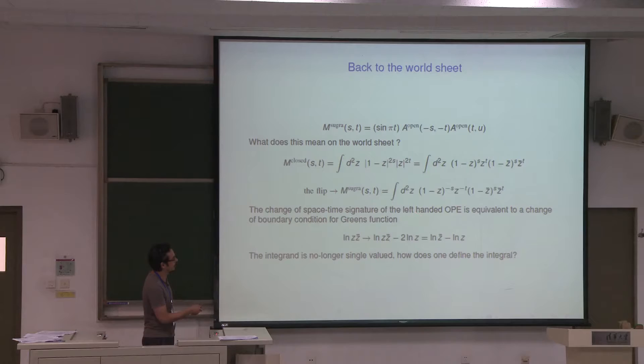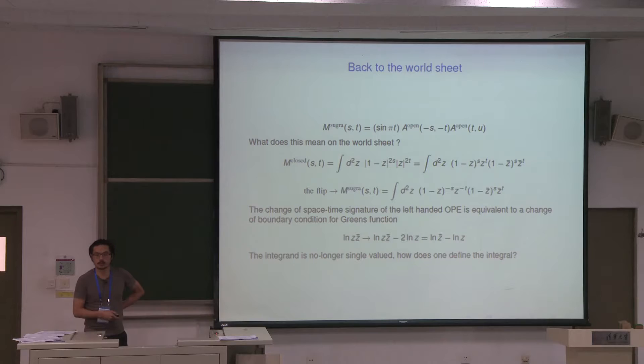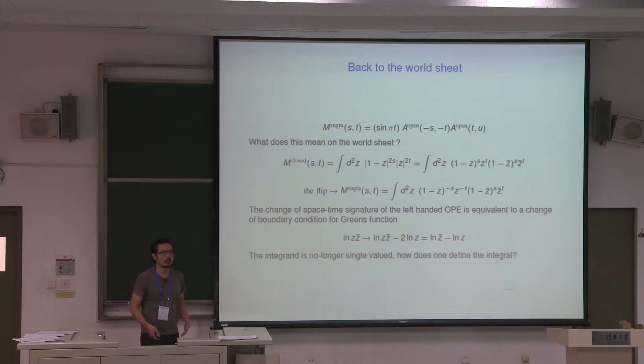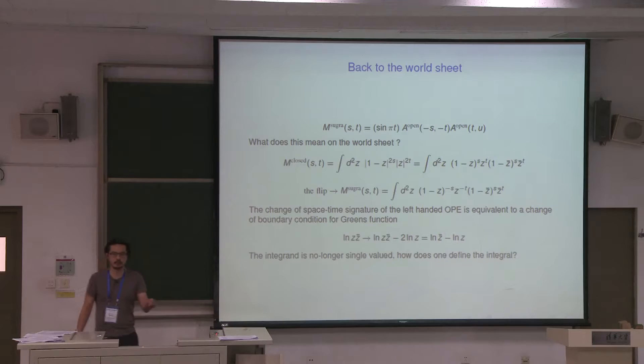What I claim is that the supergravity amplitude is essentially this integral where one side has its signature flipped to minus — a change of spacetime signature for the left-handed OPE. Thinking about it, this is equivalent to changing the Green's function. Usually the world sheet Green's function is log(z z-bar). The fact that I want a negative sign with respect to z-bar and z means all I have to do is add a homogeneous term to my Green's function, which you can always do when solving the Green's function with a delta function source.